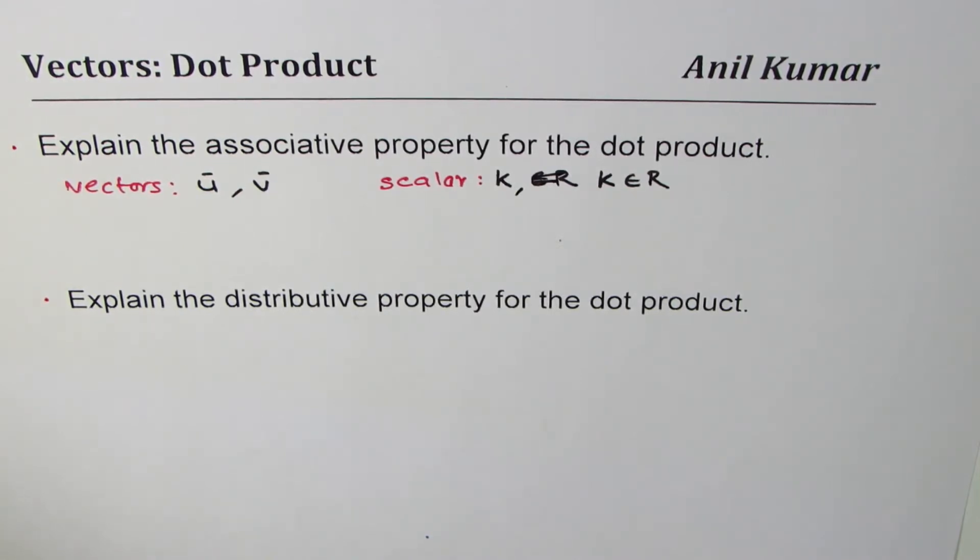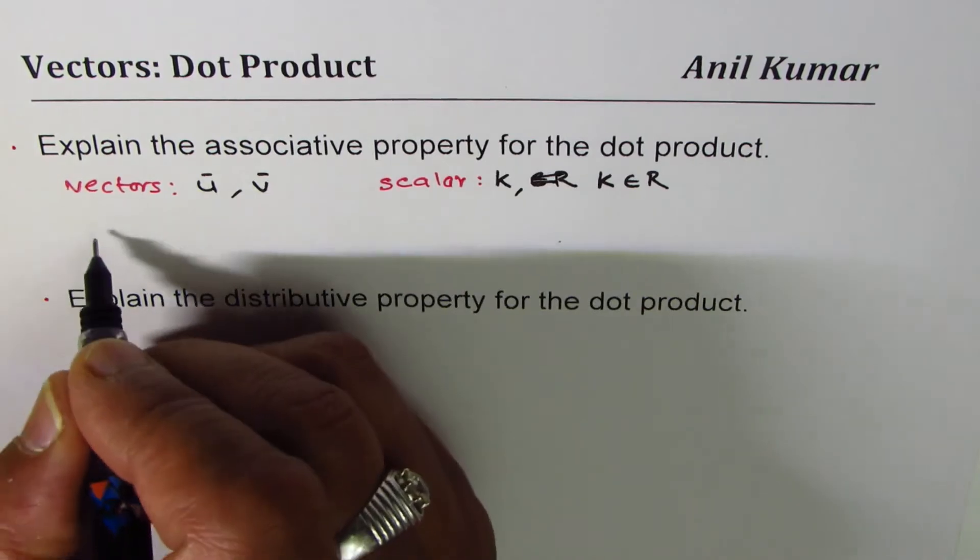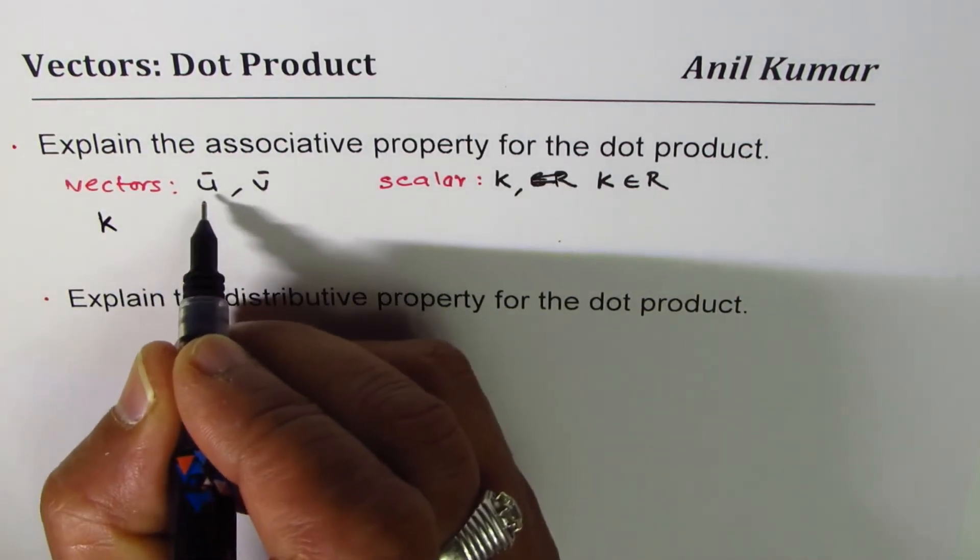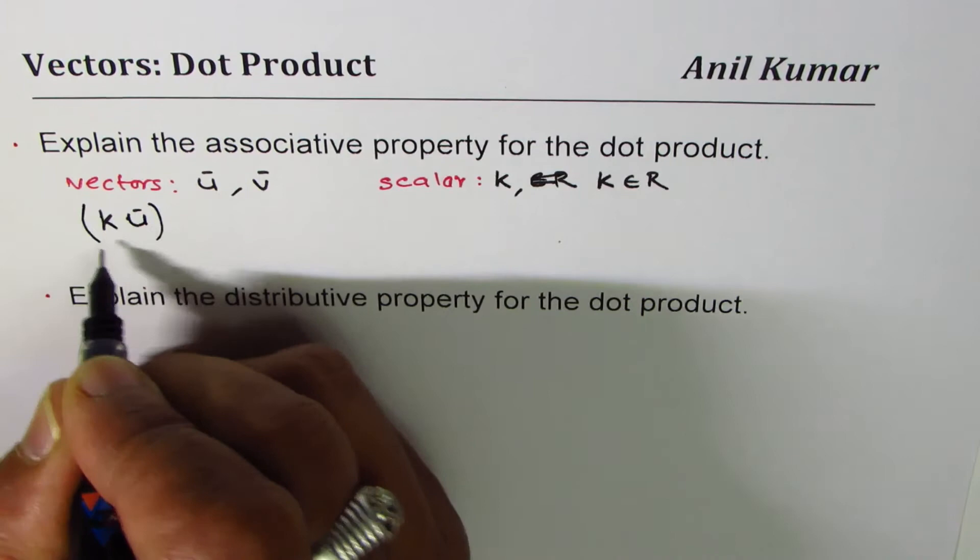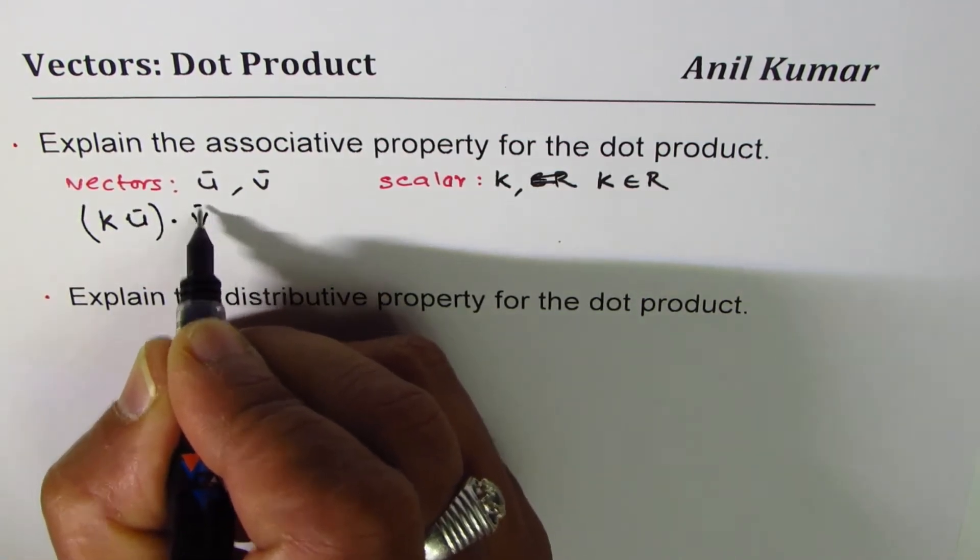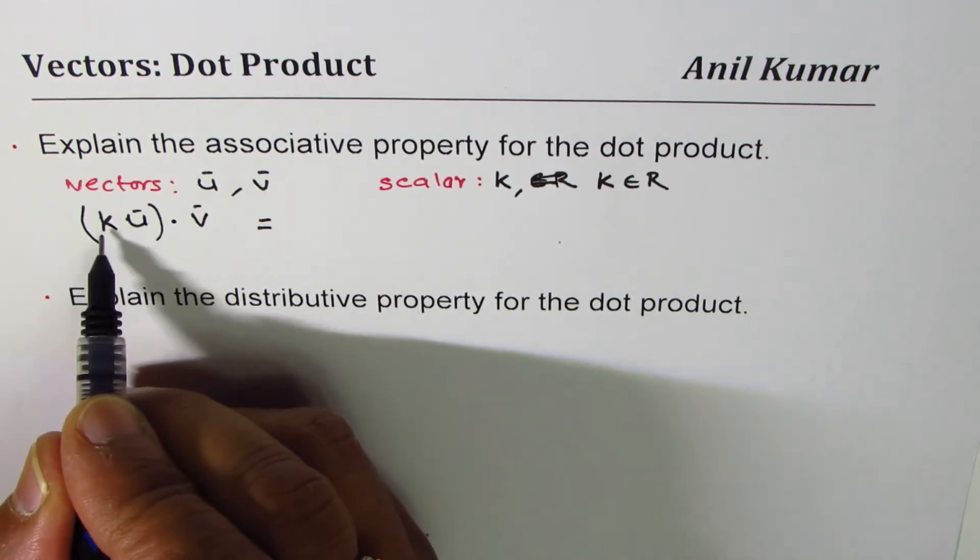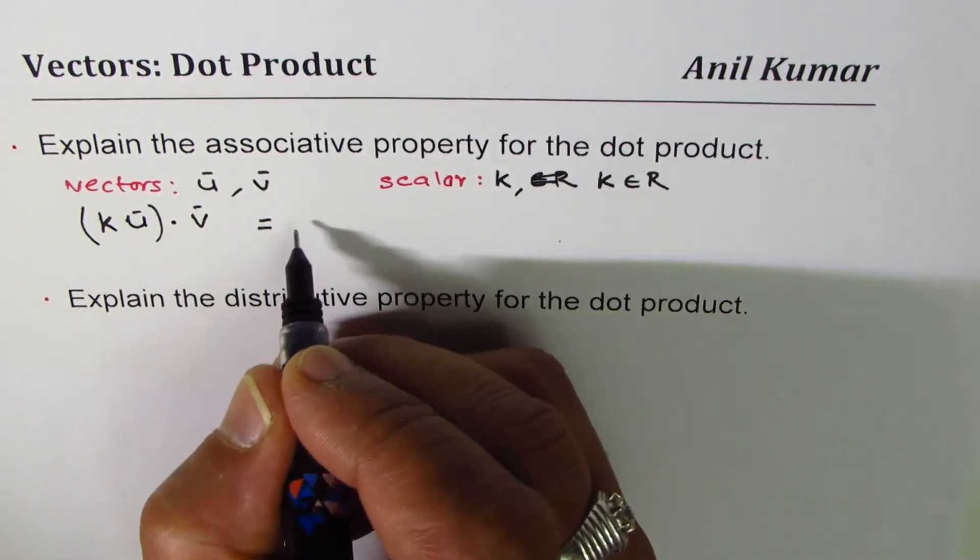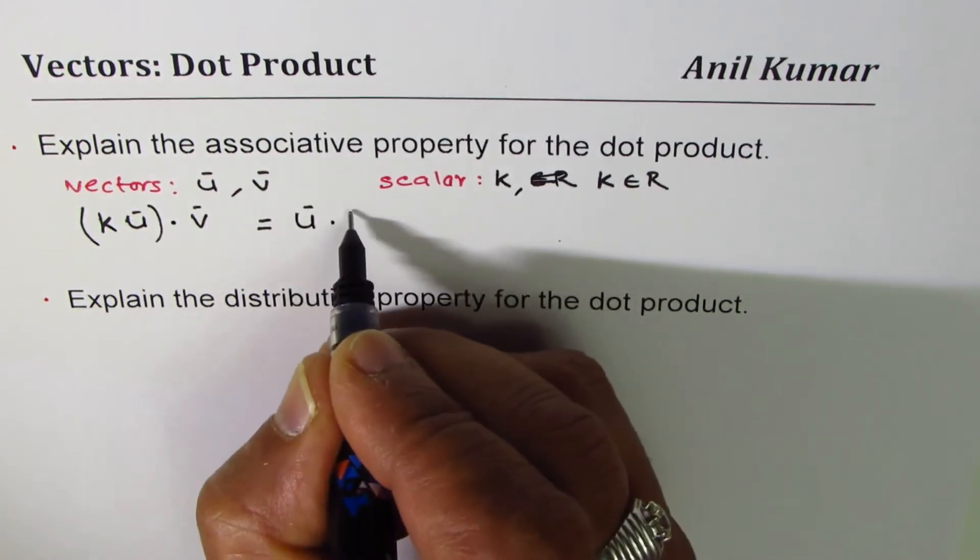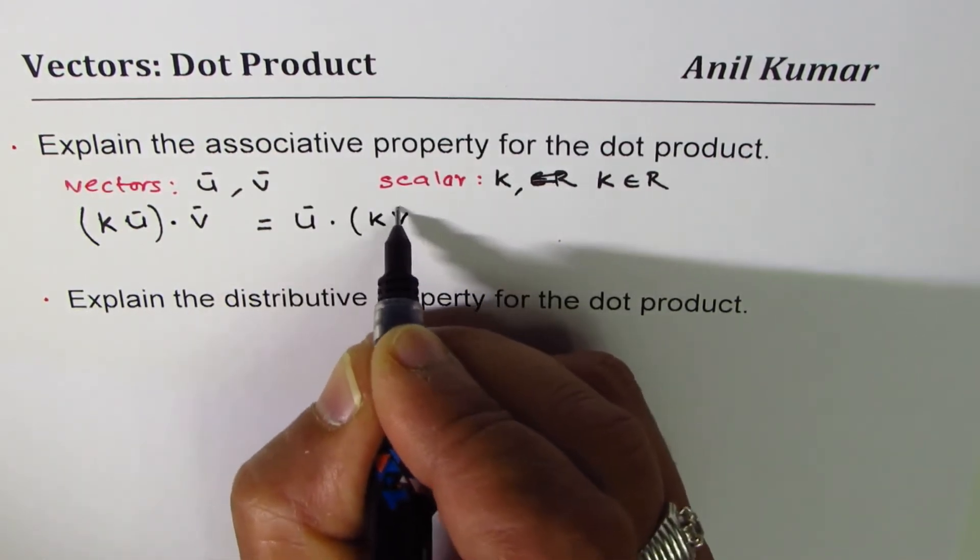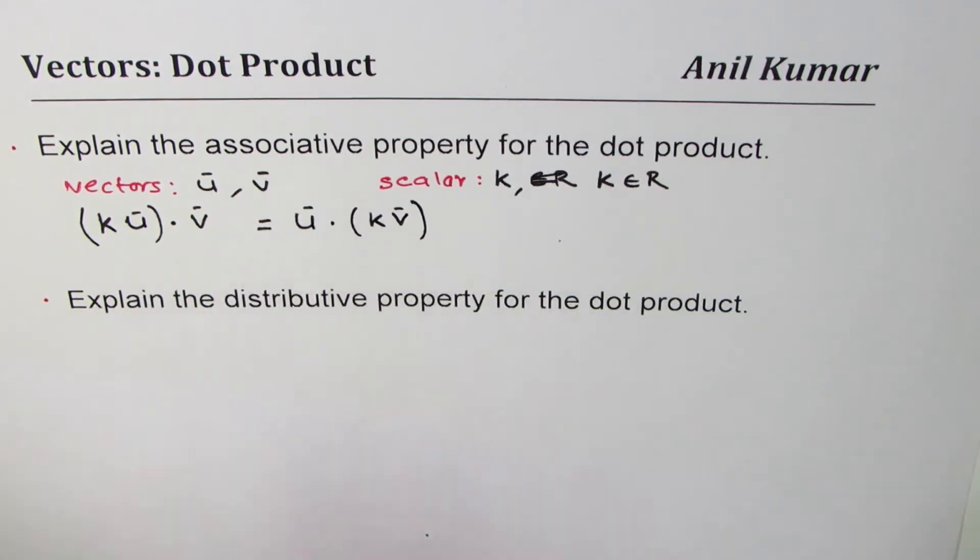So the associative property says that the product of scalar with the vector times the dot product with the vector is same as we could multiply k with v - it's the same as u dot the product of k and v. So the order doesn't really matter, that is the associative property of vectors. (k·u)·v = u·(k·v) = k(u·v).